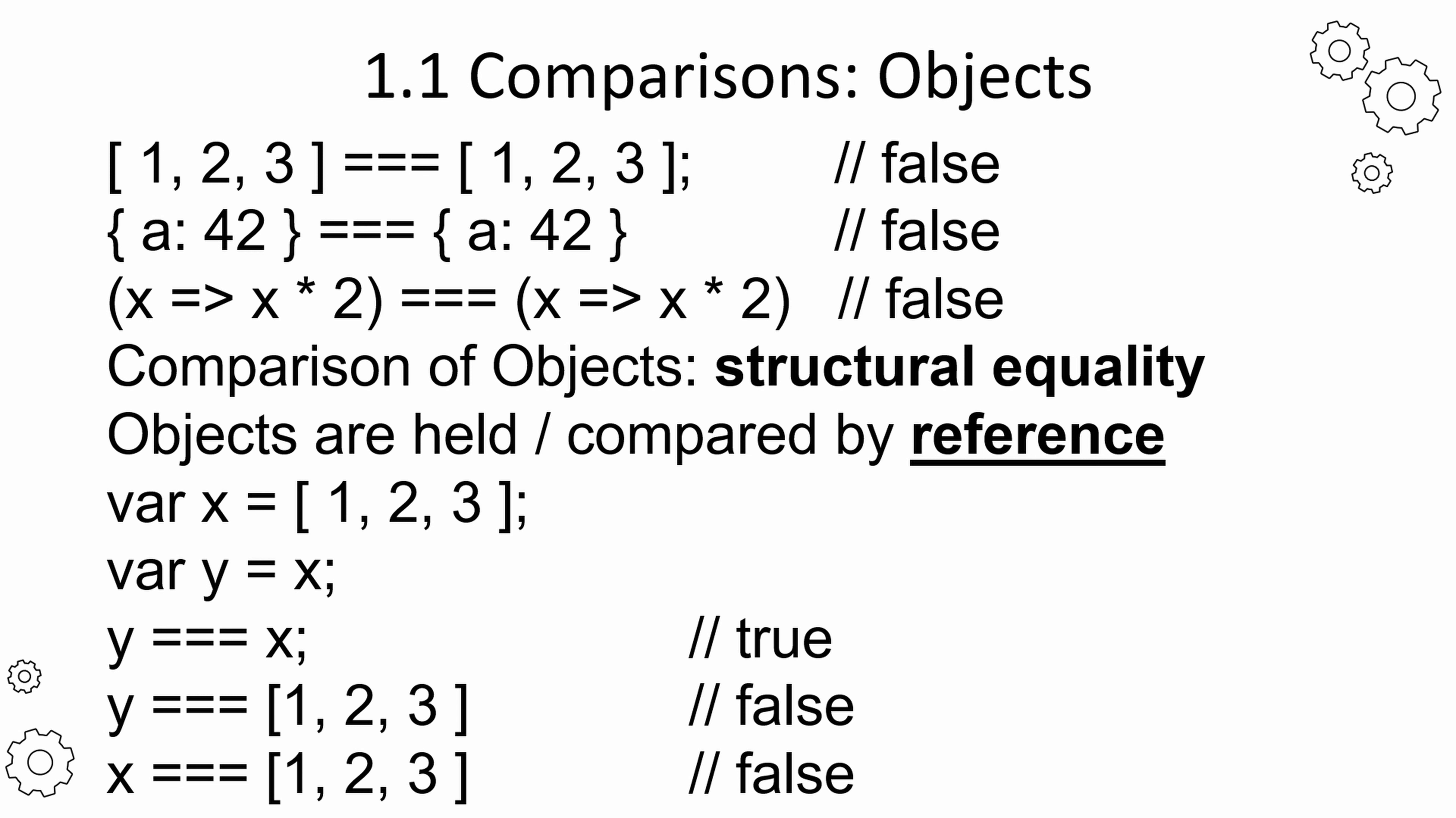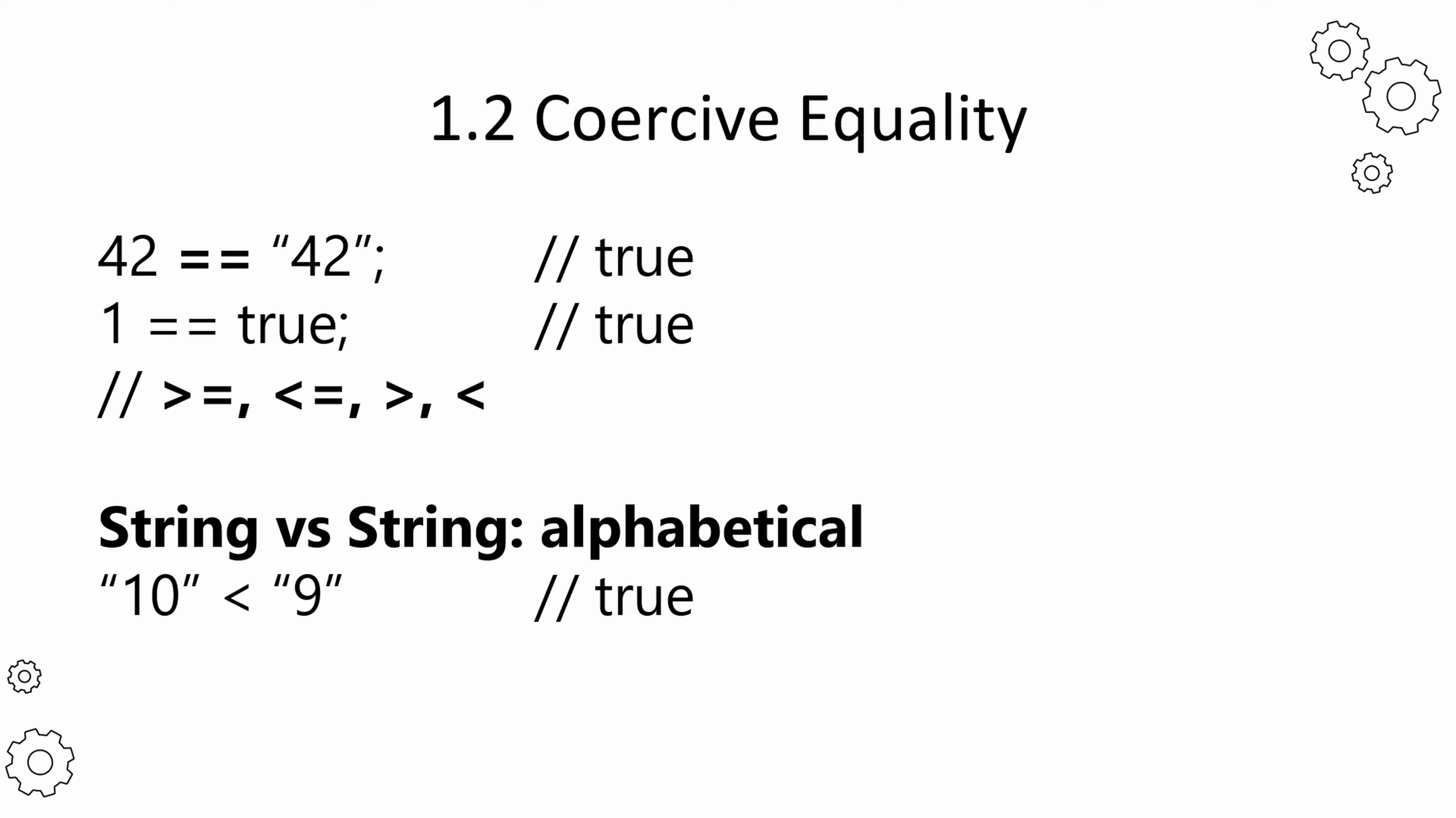Now we come back to the double equal operator, which will convert the two operands to the same data type before comparing them. This process is called coercion. A simple rule of thumb is that JavaScript prefers number to any other data type.